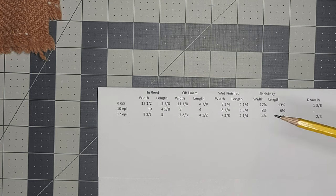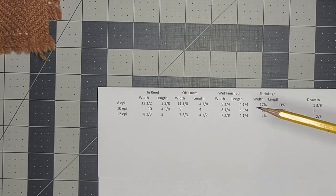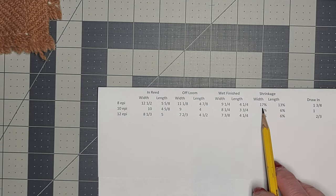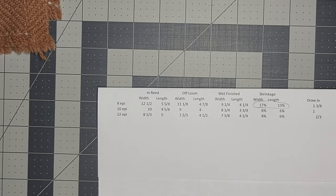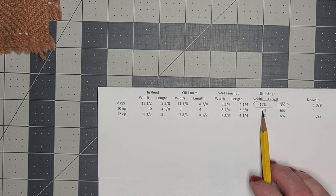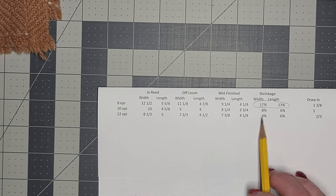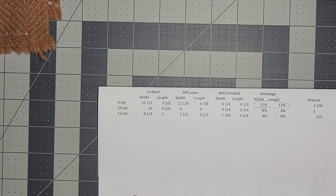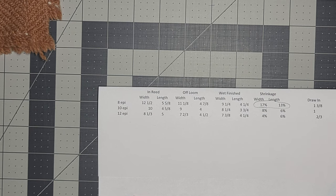So now we plugged in the finished measurements after we wet finished it and we came up with a shrinkage rate. And not surprisingly, the eight ends per inch one had a higher shrinkage rate because I had to felt it to make it a stable structure. The 10 and the 12 ends per inch, the width shrank a little bit more on the 10 ends per inch, I might have felted it a little bit, 4% on the 12 ends per inch. These numbers seem low but you have to remember this is handspun and I've wet finished it once already after I spun it, so there was some pre-shrinkage in there already.